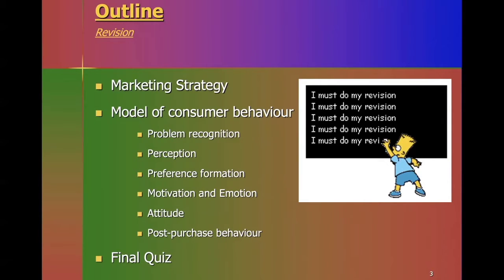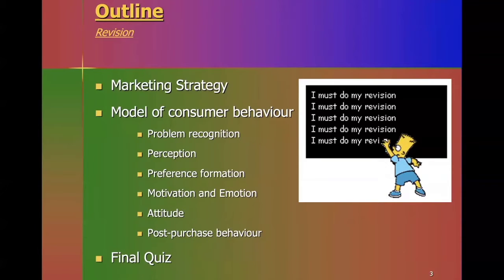We're going to review lectures such as problem recognition, perception, preference formation, motivation, attitude, and post-purchase behavior, building connections between those. When we look at problem recognition we'll think about perception; when we think about preference formation we'll look at motivation, attitudes, and post-purchase behavior — how those integrate and connect. In the final part of the lecture we'll look at the quiz and how to build a model of consumer behavior as a causal diagram or flow chart.